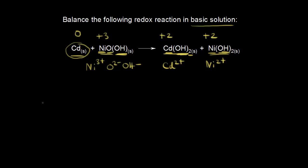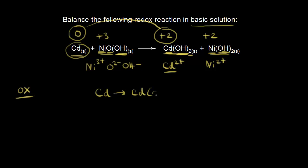We write our oxidation half-reaction. Solid cadmium is going from an oxidation state of zero to plus two — that's an increase, so that's oxidation. We write the half-reaction: solid cadmium going to cadmium hydroxide. Cadmium is balanced — one on each side. Then we balance oxygen: there are two oxygens on the right and zero on the left, so we add two water molecules to the left side. Now we have two oxygens on both sides.